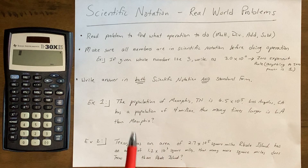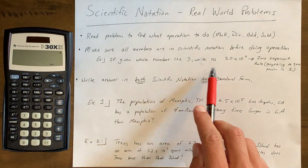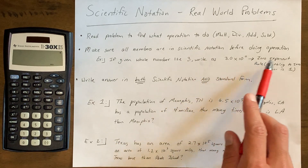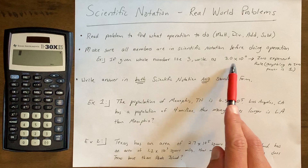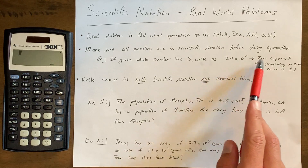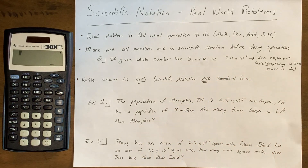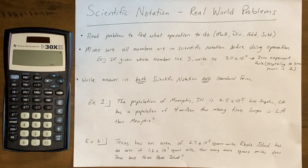For example, if they give you the whole number 3, and you need to multiply it by 1.2 times 10 to the third, you can write 3 in scientific notation as 3.0 times 10 to the 0. Remember the zero exponent rule: anything to the 0 power is 1, so 3 times 10 to the 0 is just 3 times 1, which is 3 — the value stays the same. Lastly, we want to write our answers in both scientific notation and standard form, since this is a real-world problem.